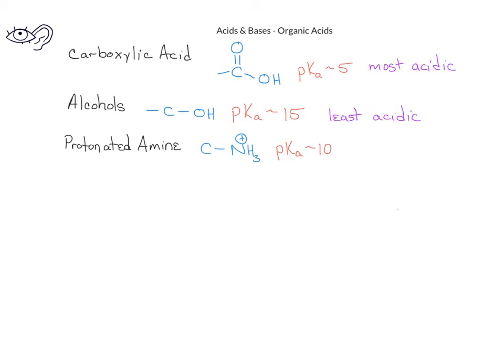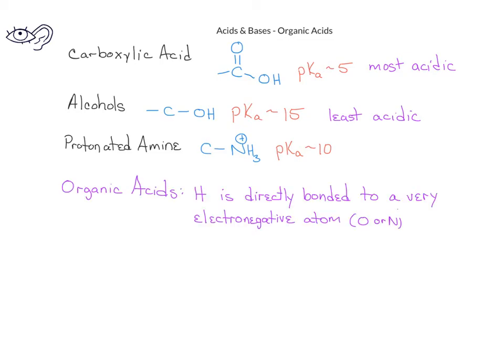Now that we've recognized three types of organic compounds that can act as acids, we can add another clarifying point to understand what types of compounds can act as acids in organic chemistry. In each of these situations, we notice that there's a hydrogen in the structure. But as we look more closely, we see that in each case, the hydrogen that is donated is attached to an atom — either an oxygen or a nitrogen — that is a very electronegative atom. So for a compound in an organic structure to act as an acid, the hydrogen should be bonded to an atom that's very electronegative.